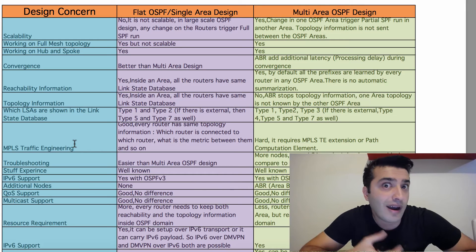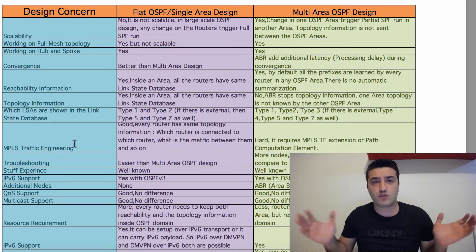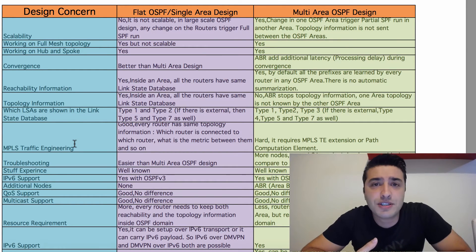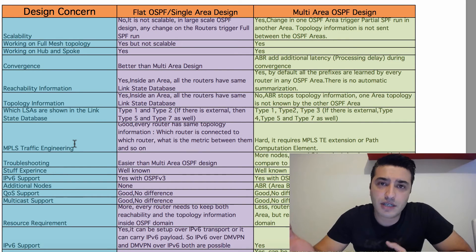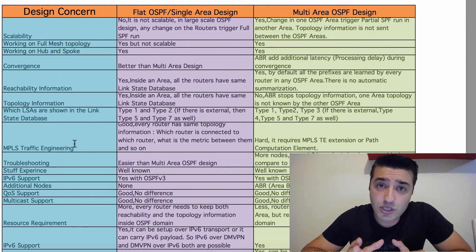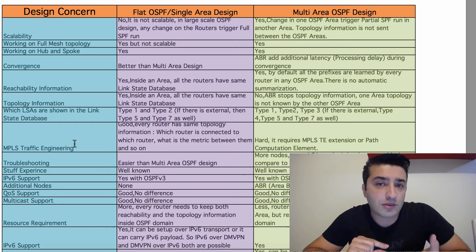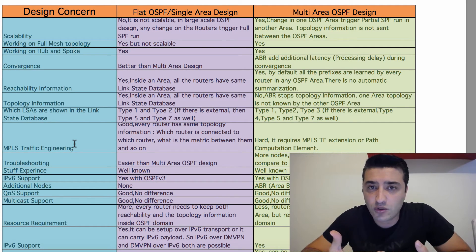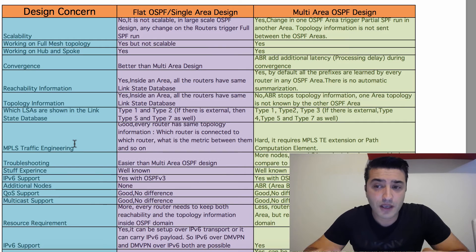That's why configuration complexity and scalability are problems with OSPF in hub-and-spoke. Now let's cover reachability information and topology information — we need to understand these first, and then understanding why OSPF multi-area design limits topology information between areas will be much easier. Reachability information means a router advertises a subnet (IP prefix) to another router — IP address and subnet mask are sent. Topology information is about which routers are connected to each other and what the OSPF cost is between them.